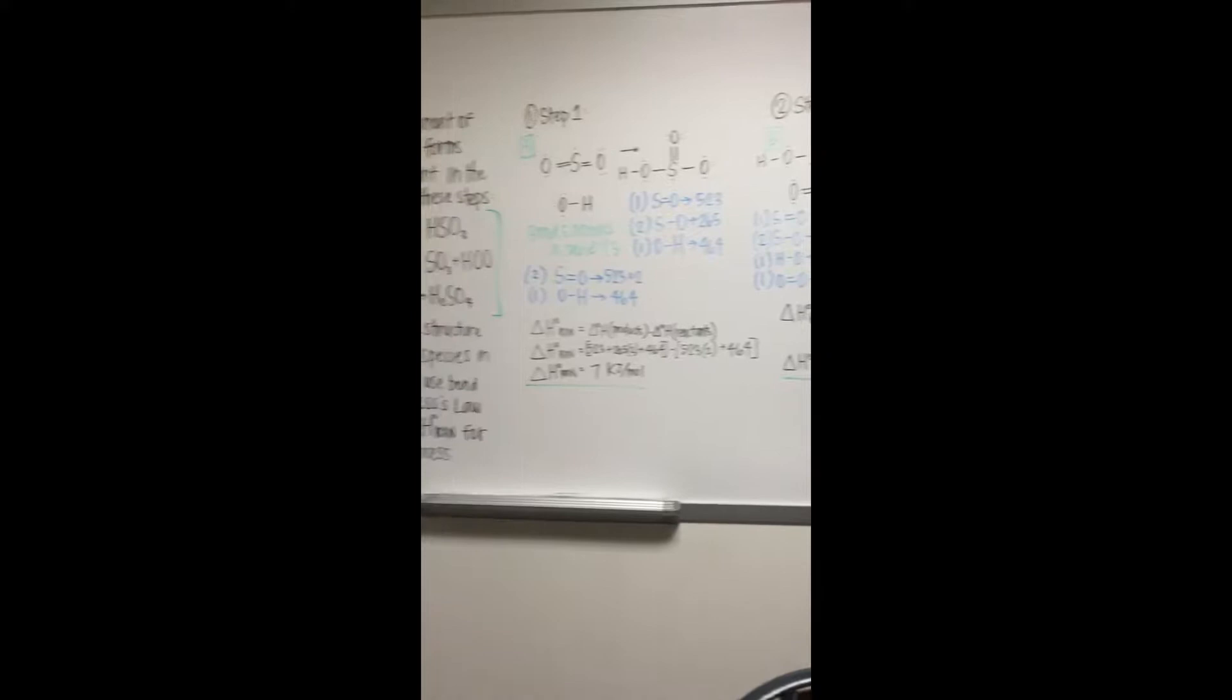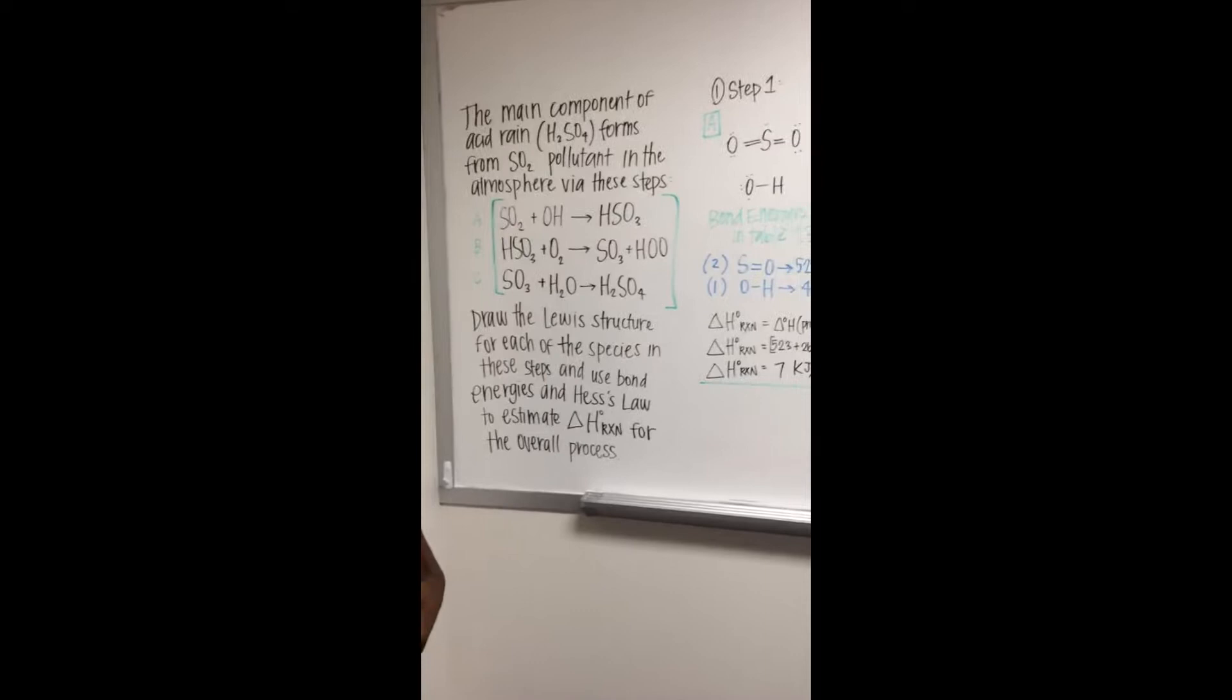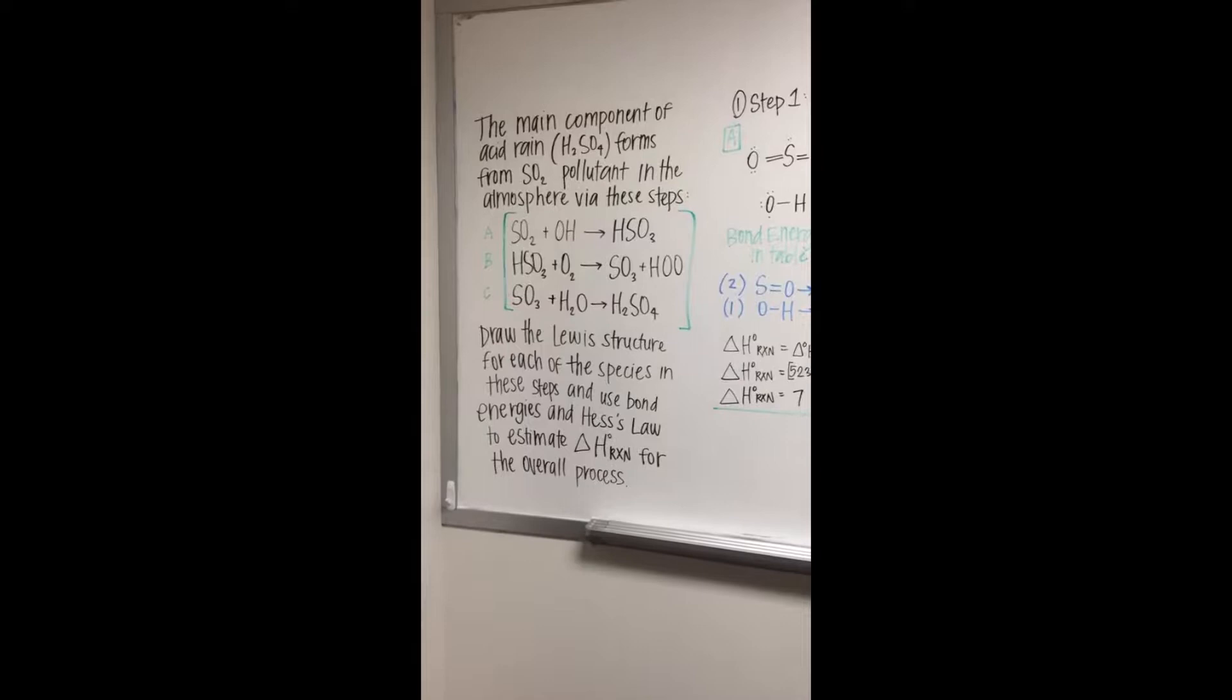Hi, Raymond and I are going to show you how to work out number 115 challenge problem in chapter 9. The main component of acid rain, H2SO4, forms from SO2 pollutant in the atmosphere via these three steps. Draw the Lewis structure for each of the species in these steps and use bond energies and Hess's Law to estimate the enthalpy change in reaction for the overall process.